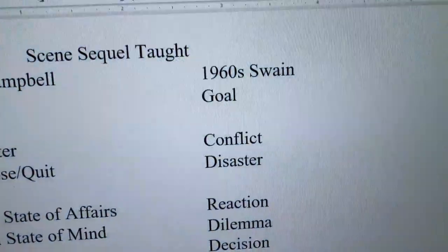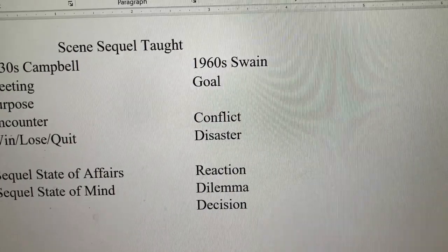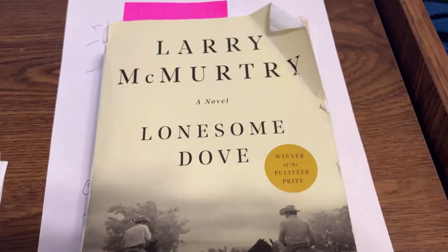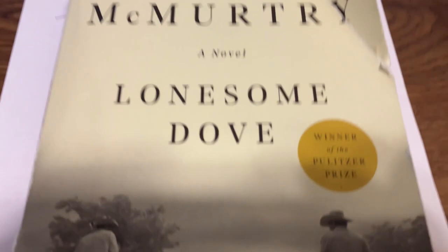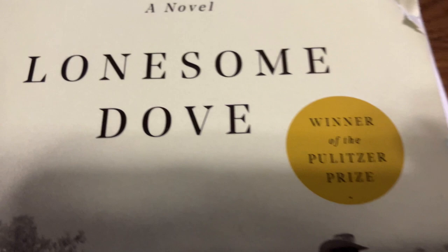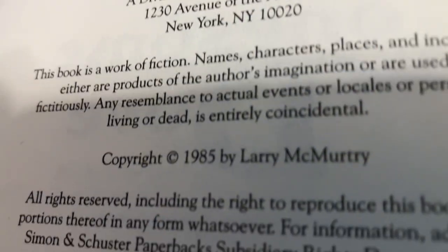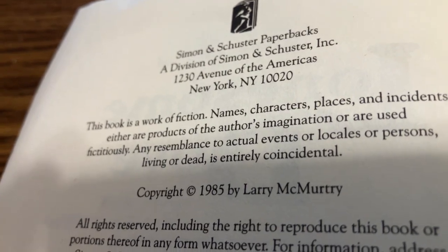Simpler is: goal, conflict, disaster, reaction, dilemma, decision. So this is Lonesome Dove by Larry McMurtry, winner of the Pulitzer Prize, published in 1985.